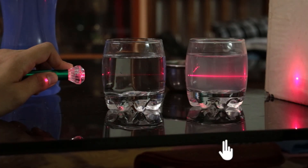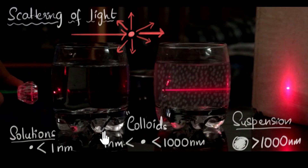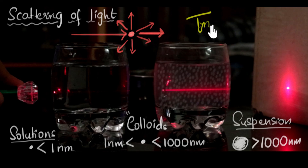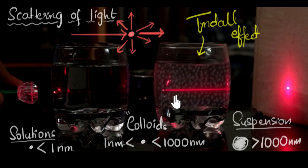One last detail: whenever we have scattering of light due to colloidal particles, we often call that the Tyndall effect — or Tyndall scattering — because John Tyndall did a lot of work on this subject. This also has a great application: if we have any mixture and we want to know whether it's a colloid or not, we'll just shine light through it. If we can see the path of light, that's the Tyndall effect, and then it's a colloid.